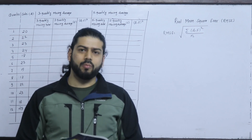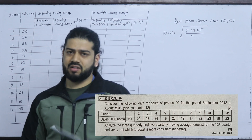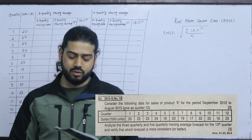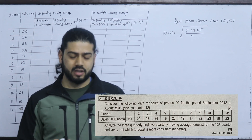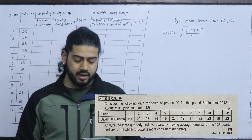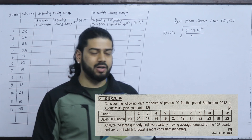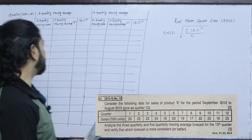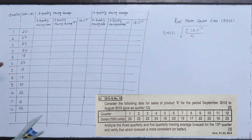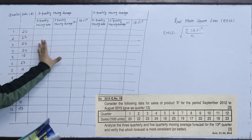The moving average includes 3-quarterly and 5-quarterly approaches. First we will try to work through the 3-quarterly moving average.